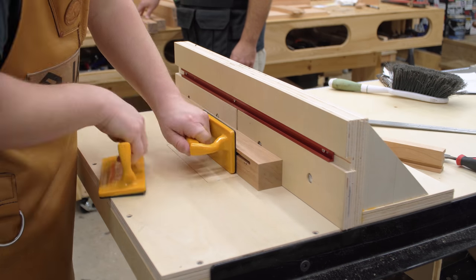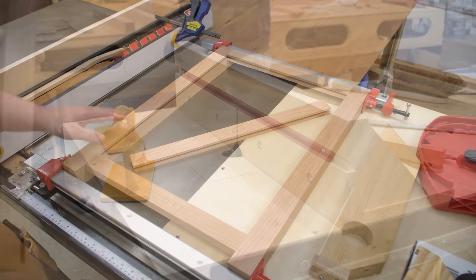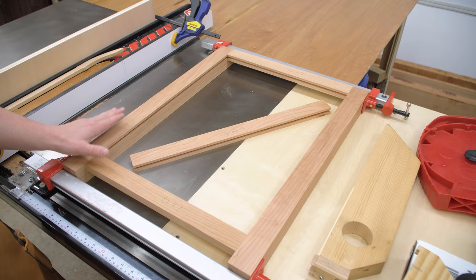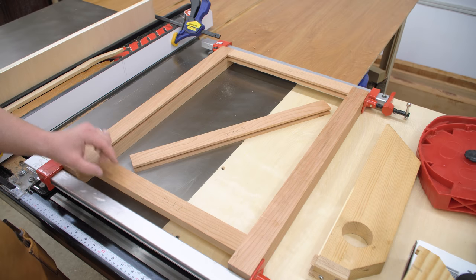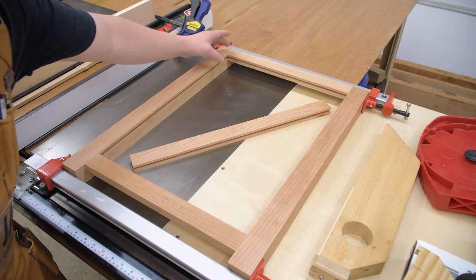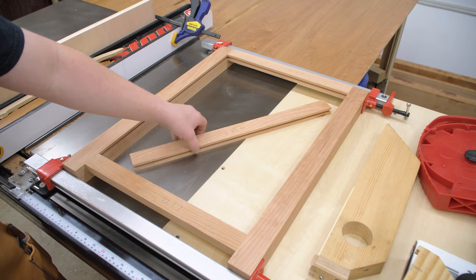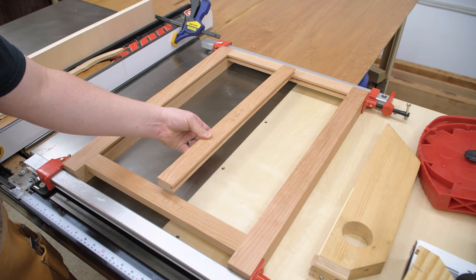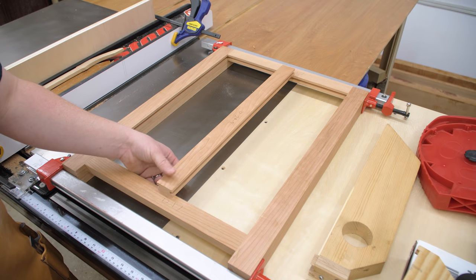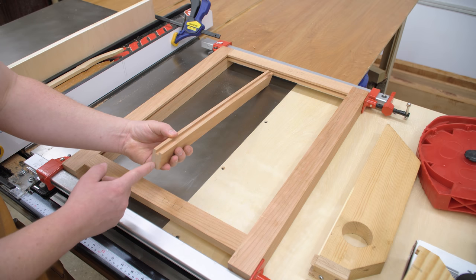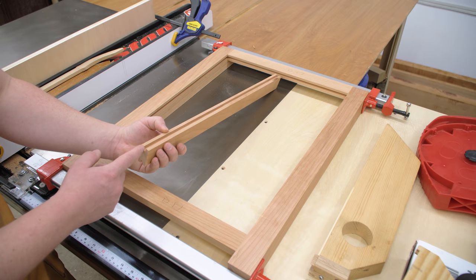We have all the grooves cut for the panels, and this is a dry assembly of cabinet D. I made sure to put this together so everything is nice and square and the tops are flush. This is the right side of cabinet D, and it gets a center stile like so.